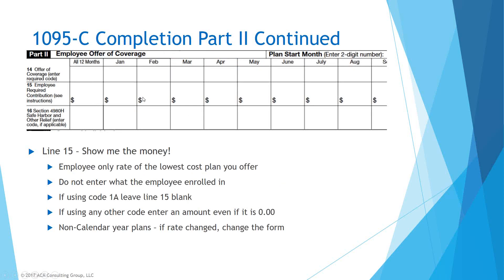Line 15 is where all the money comes in. Enter the lowest-cost employee-only plan rate you offer. If you offer three plans at $80, $100, and $150, you use $80. If that $80 plan is under the $95.38 federal poverty level marker, offered to employees, spouses, and dependents, and is minimum value and minimum essential coverage, you can use code 1A and leave line 15 blank. If you need to use another code — say 1B, employee-only — you still need to fill out line 15, even if it's all zeros. For non-calendar-year plans, if the rate changed mid-year, reflect that change on the form.